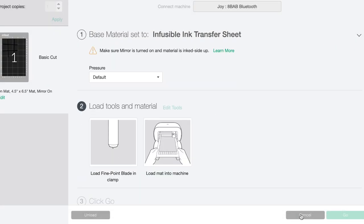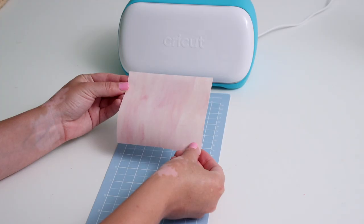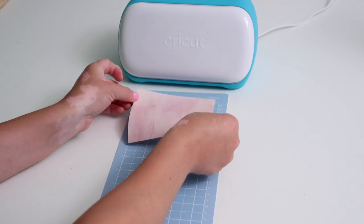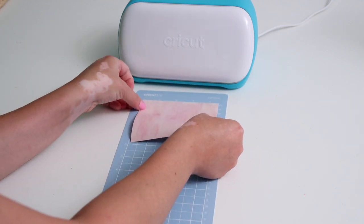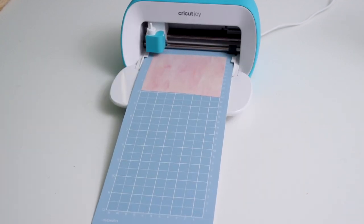So we can go ahead and hit that and now we're ready to load our materials in. So this is the Infusible Ink transfer sheets I was talking about. And I cut a small portion out that's going to be the perfect size for my grid and just stuck it right onto my mat with the ink side up and I loaded it into my machine.